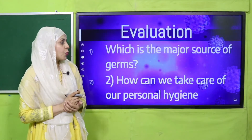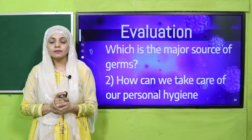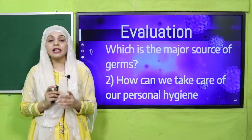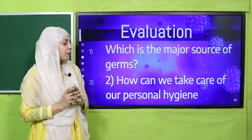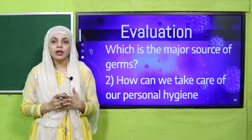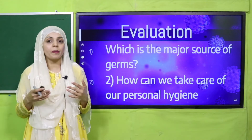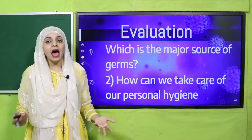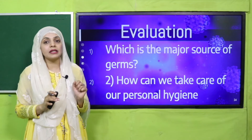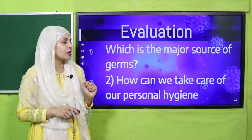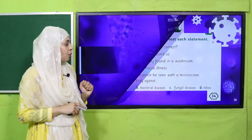Evaluation: Which is the major source of germs? Dirty hands. How can we take care of our personal hygiene? By washing our hands, taking a bath daily, trimming our nails, cutting our hair, and wearing neat and clean clothes. That is how we can take care of our personal hygiene.